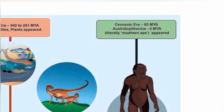Cenozoic era, 65 million years ago. Australopithecus appeared 4 million years ago. Literally meaning 'southern ape,' they appeared during this era.